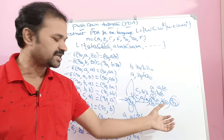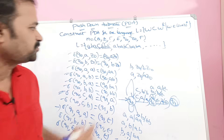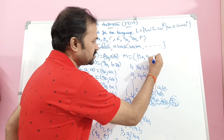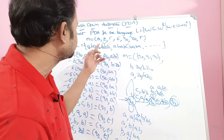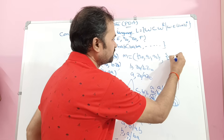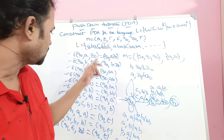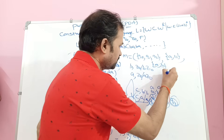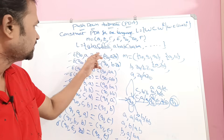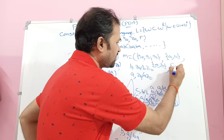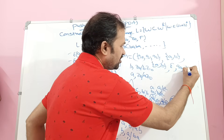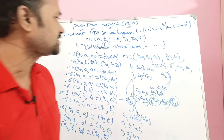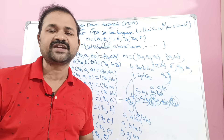This is the transition diagram for this problem. Now let us write the 7-tuple: M = (Q, sigma, tau, delta, Q0, Z0, F), where Q = {Q0, Q1, Q2}, the input alphabet sigma contains A and B, tau contains A and B (we don't place C on the stack), delta is the transition function already defined, Q0 is the initial state, Z0 is the starting symbol of the stack, and the final state is Q2. This is the PDA for this problem.